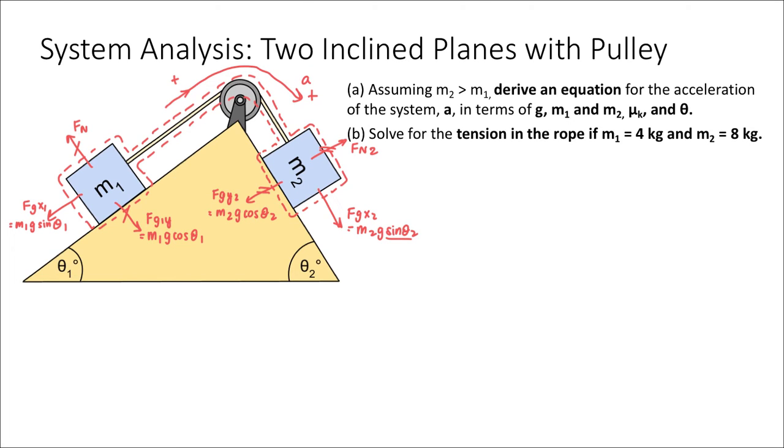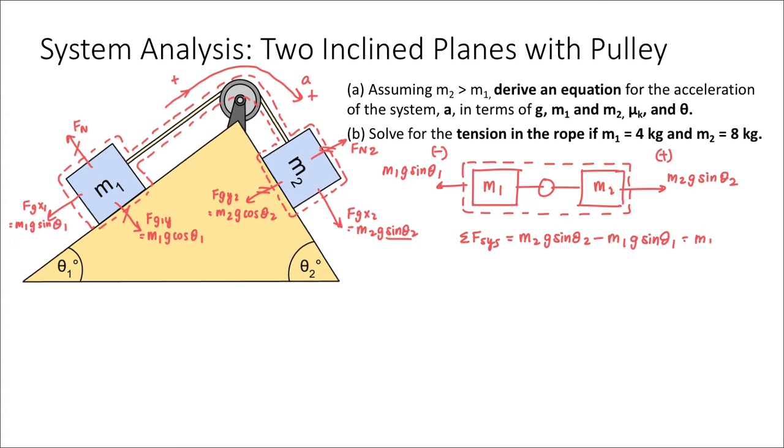So again, I'll write out my system diagram here, my force diagram, showing the external forces acting on the system, and then I'll write out Newton's second law. My only two external forces that actually affect the acceleration of the system are just those parallel components of gravity on each block, which I've defined in our previous examples and videos. This will be the positive direction, and this will be the negative direction, because that's how I've defined my assumption for acceleration, and we'll see if that's a good assumption or not when I'm done.